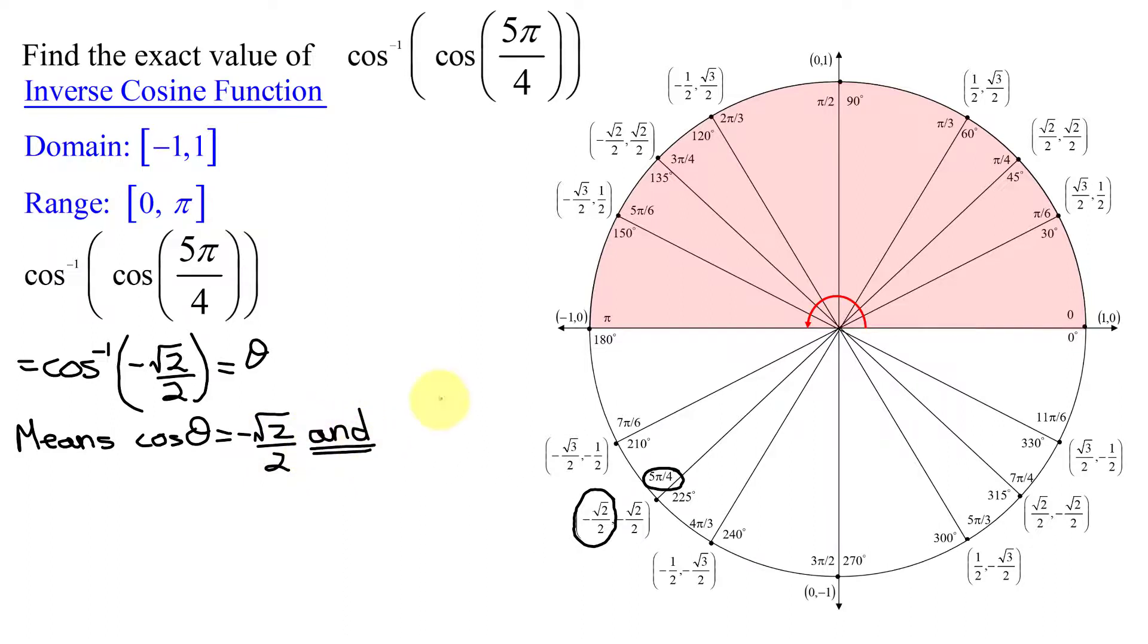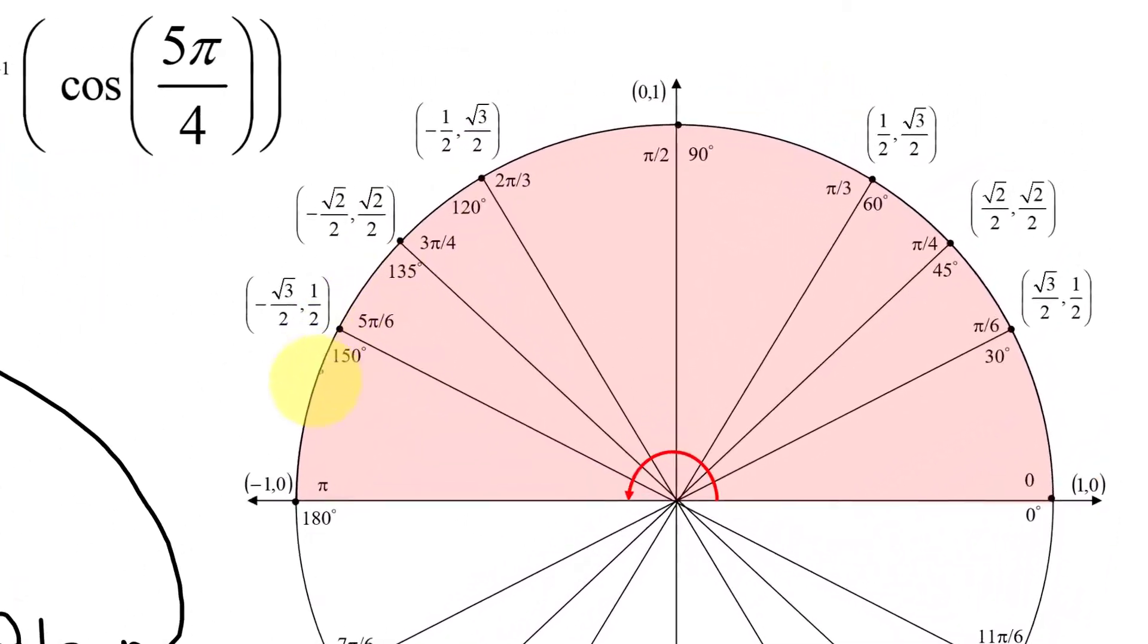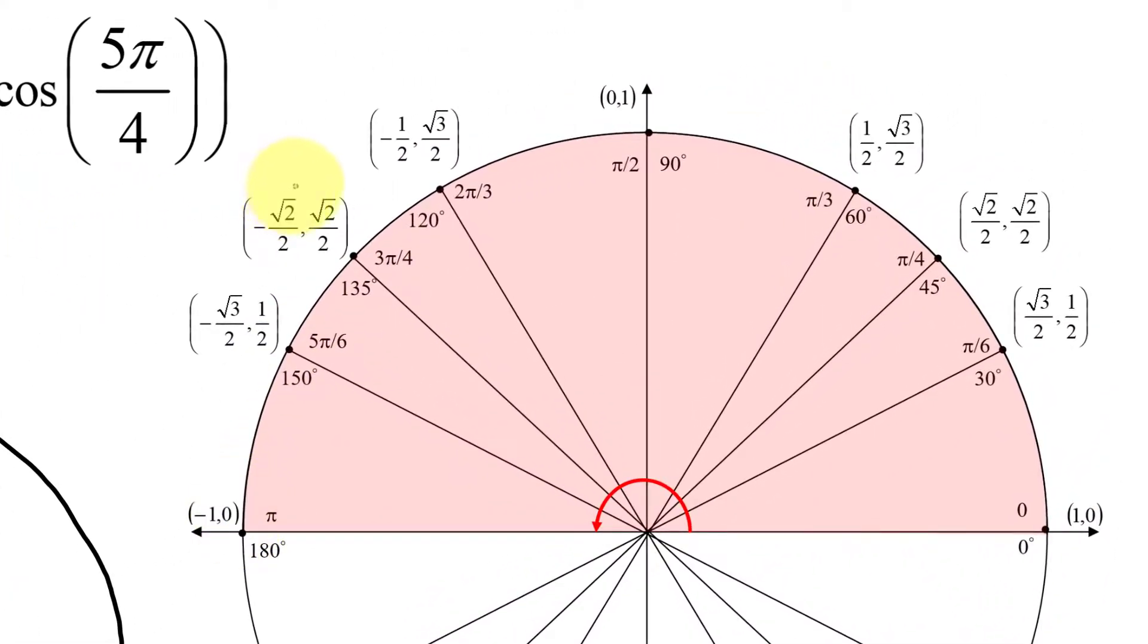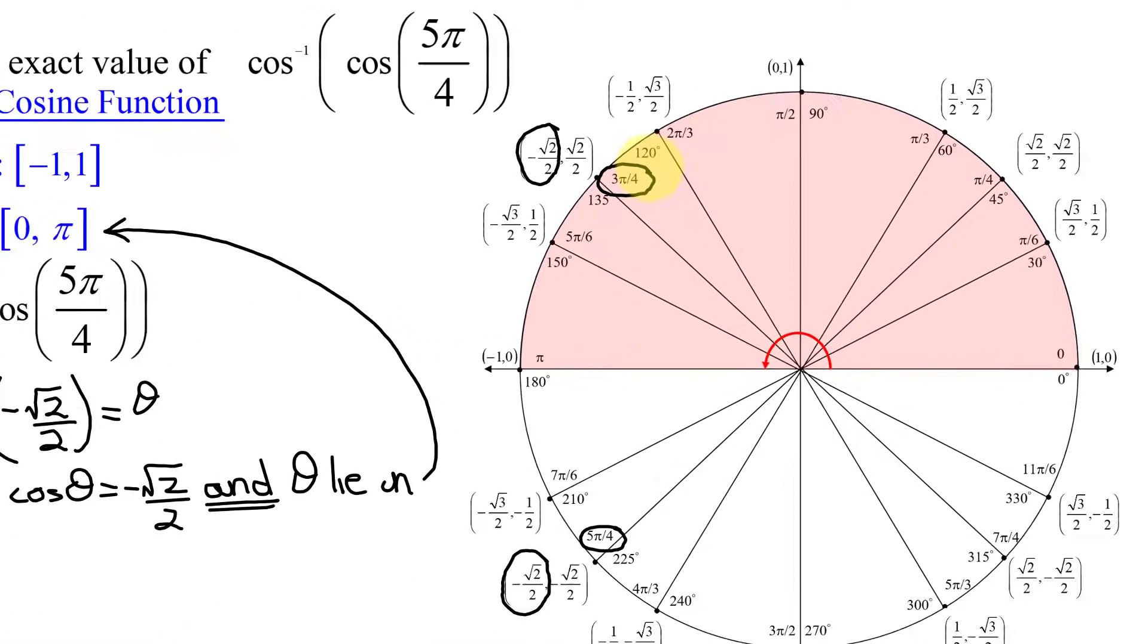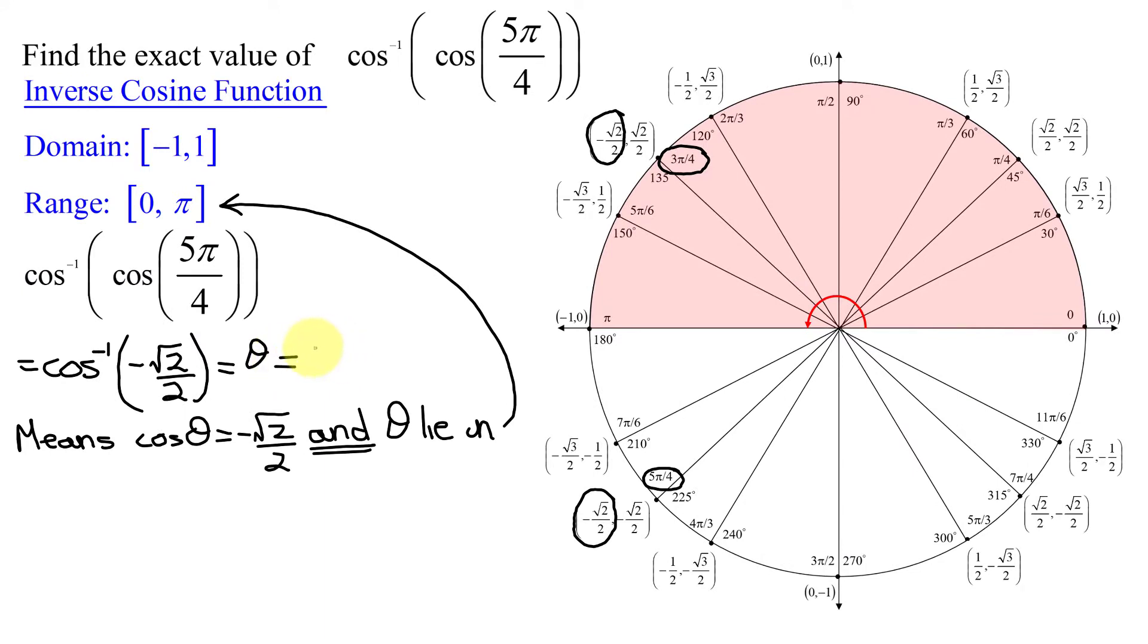But don't forget the restrictions. And θ has to lie in the region [0, π]. So I'm looking for an angle somewhere between 0 and π, whose x-coordinate is negative the square root of 2 over 2. Since the x-coordinate is negative, I have to be over here in quadrant 2. And here I have an x-coordinate of negative the square root of 2 over 2. And what angle gives me that? It's 3π over 4. So I know the angle I'm looking for is 3π over 4.